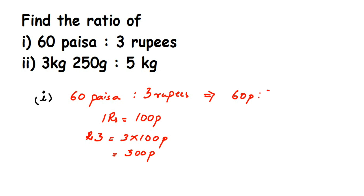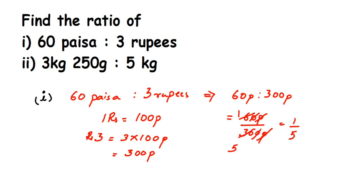So 60 paise is to — instead of 3 rupees I'm going to write 300 paise. Ratios can also be written in fraction form, so this will be 60 paise over 300 paise. The units cancel, and you can cancel the zeros — we have 6 and 30. Cancel further: 6 ones are 6, fives are 30, so this equals 1 is to 5. Ratios are always brought into simplest form. So the answer is 1 is to 5.